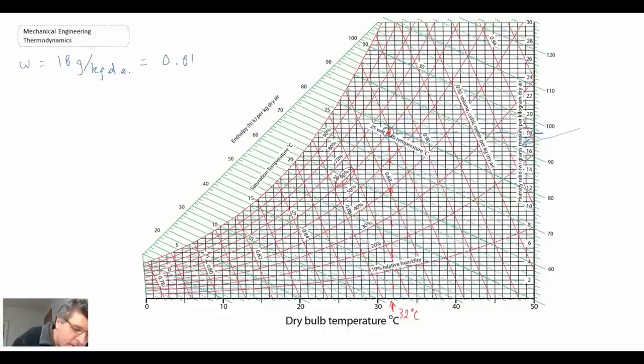So that becomes our specific humidity. The next thing they want us to get is the enthalpy. And enthalpy are the green lines going up, and so here are the enthalpy data on the side. So if we move our way up here, we find a value somewhere around 79. So that's kilojoules per kilogram of dry air.